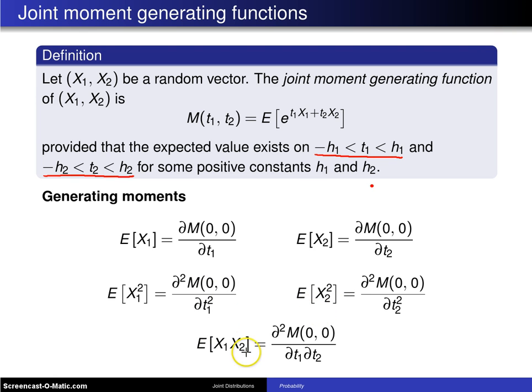Finally, if for example it's helpful for calculating a covariance, you might want the expected value of x1 times x2. And that's the mixed second partial derivative of the joint moment generating function with respect to t1 and t2 evaluated at 0, 0.